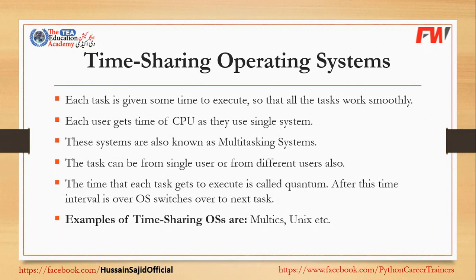The operating system handles tasks one by one. We have an equal time interval — we call it a quantum, a single unit of time. Everything is given a single time slot, and everything will be done in turn with each other.